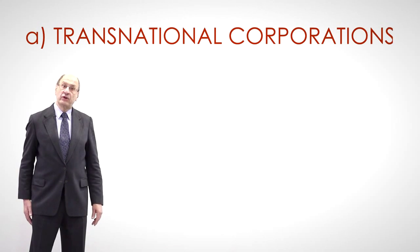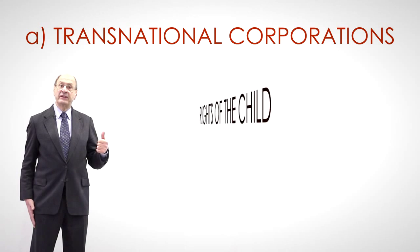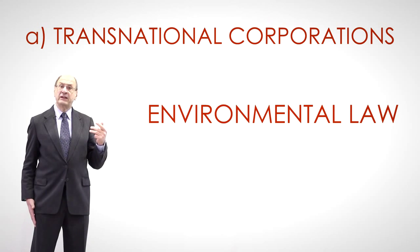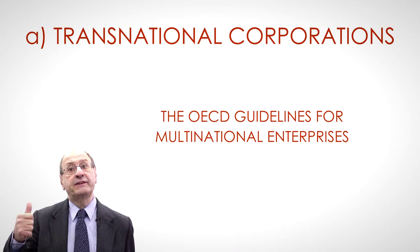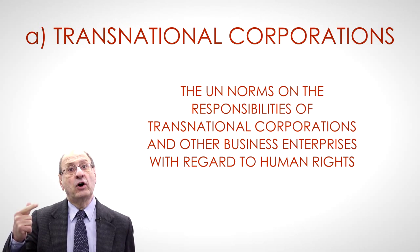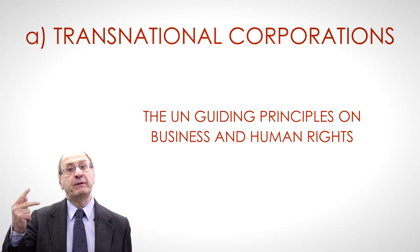The actions and omissions of these new subjects of international law can have great impact on particular human rights areas, such as labour rights, the rights of the child, indigenous people's rights, and environmental law. This has led to efforts to regulate the conduct of transnational corporations — for instance, the OECD Guidelines for Multinational Enterprises of 1976, the UN Norms on the Responsibilities of Transnational Corporations and Other Business Enterprises with Regard to Human Rights of 2003, and the UN Guiding Principles on Business and Human Rights of 2011.